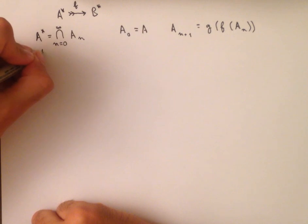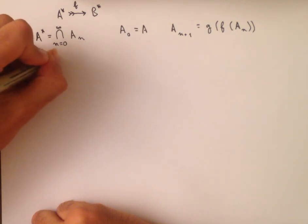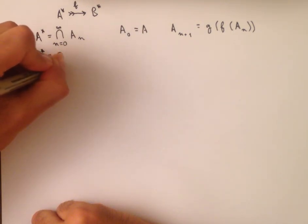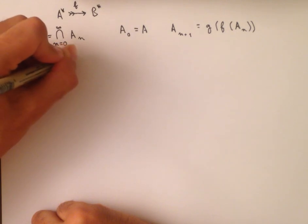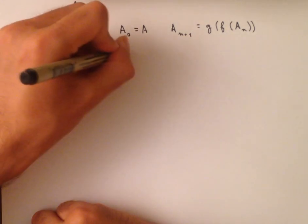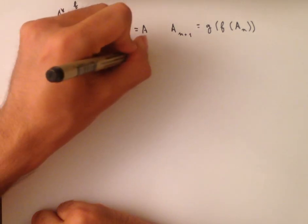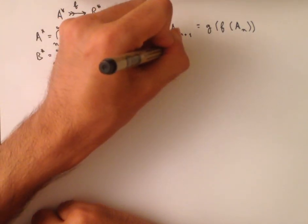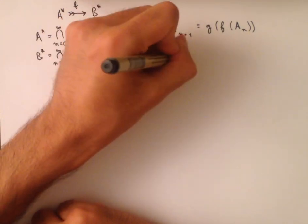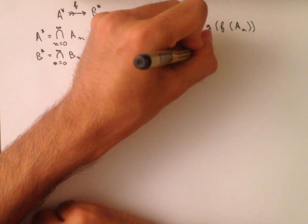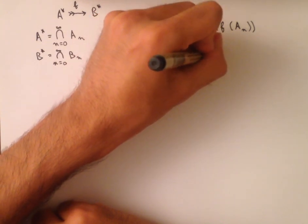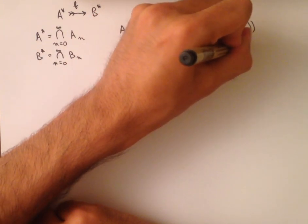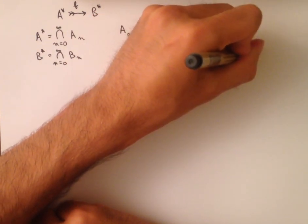Similarly, B* is equal to the intersection as n equals 0 to infinity of B_n, where B_0 is equal to B, and B_{n+1} is equal to F of G of B_n.